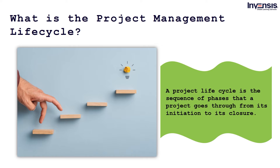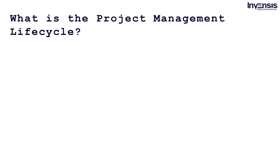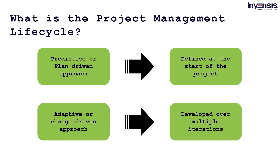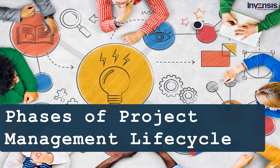The project life cycle can be defined and modified as per the needs of the organization. Even though every project has a definite start and end, the particular objectives, deliverables, and activities vary widely. The life cycle provides the basic foundation of actions to be performed, irrespective of the specific work involved. Project life cycles can range from predictive or plan-driven approaches to adaptive or change-driven approaches. In a predictive life cycle, the specifics are defined at the start and any alterations to scope are carefully addressed. In an adaptive life cycle, the product is developed over multiple iterations, and detailed scope is defined for each iteration only as it begins.